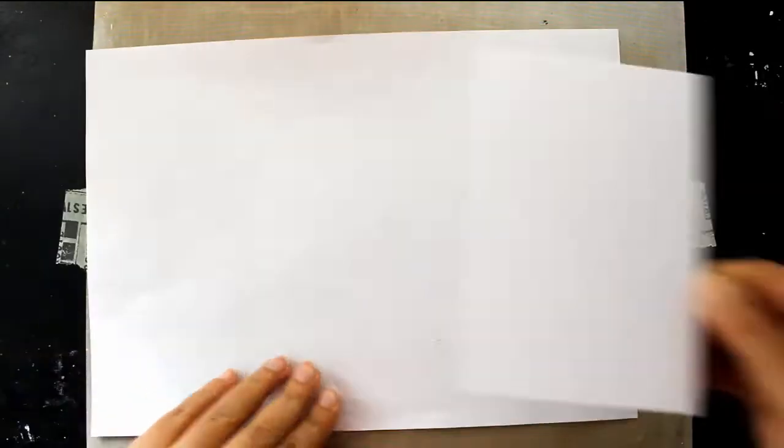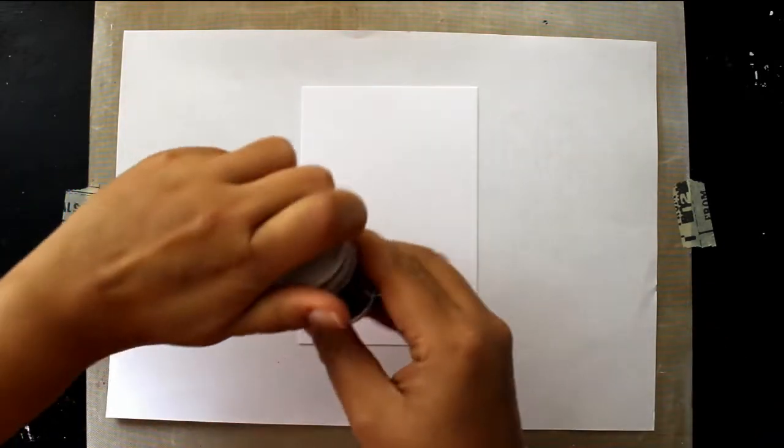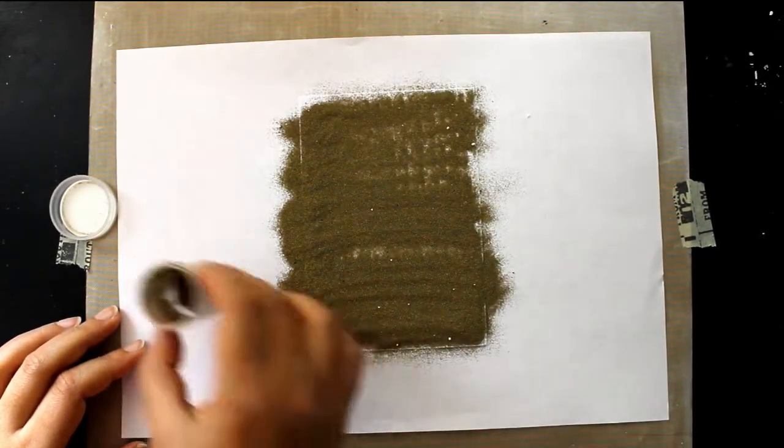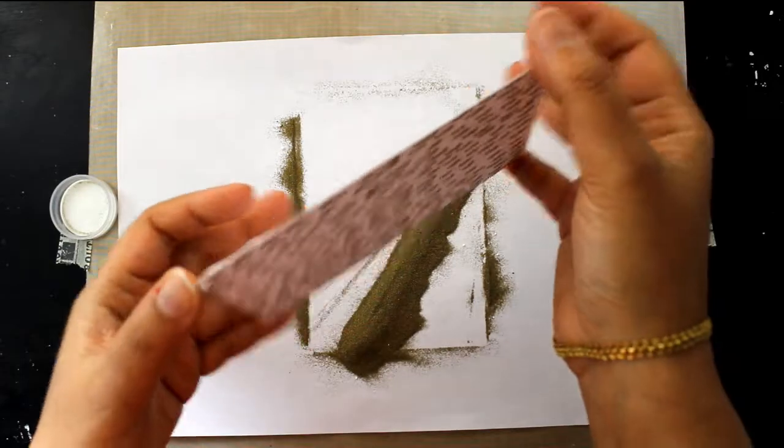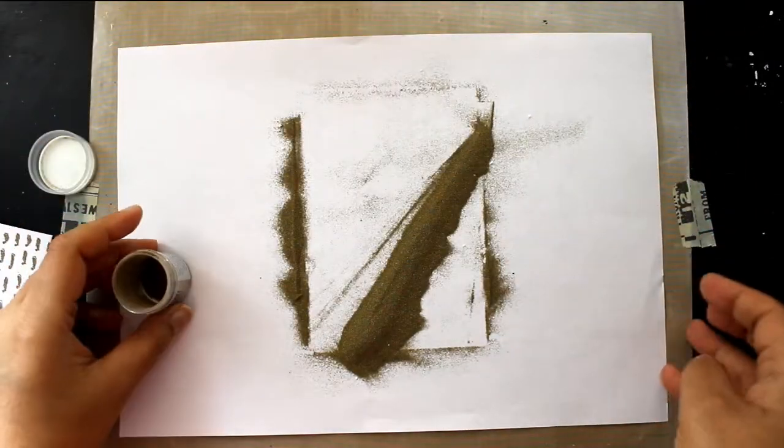I've just stamped with the embossing ink and I'm sprinkling some gold super fine embossing powder from WOW. I am tapping it off and returning the embossing powder back to the jar.